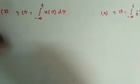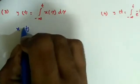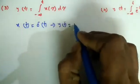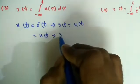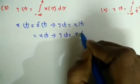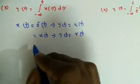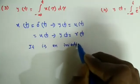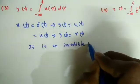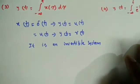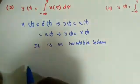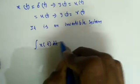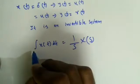Next question: y(t) = ∫_{-∞}^{t} x(τ)dτ. If x(t) = δ(t), integrating the impulse gives the unit step u(t). If x(t) = u(t), integrating gives the ramp r(t). If I give any constant I get t; if I give 2 I get 2t — different inputs give different outputs. Therefore it is an invertible system. To find the inverse, we use the Laplace transform integration property: ∫x(t)dt ↔ (1/s)·X(s).